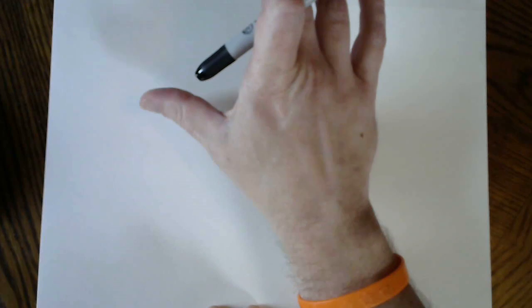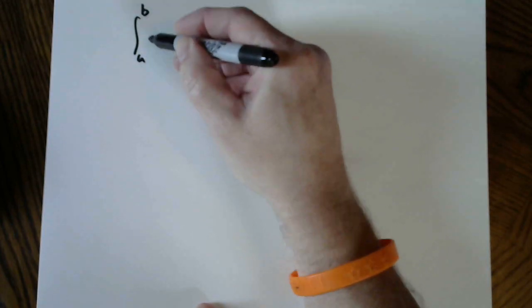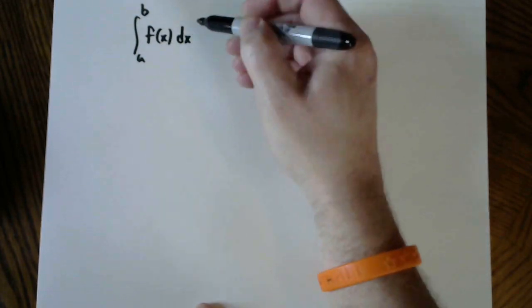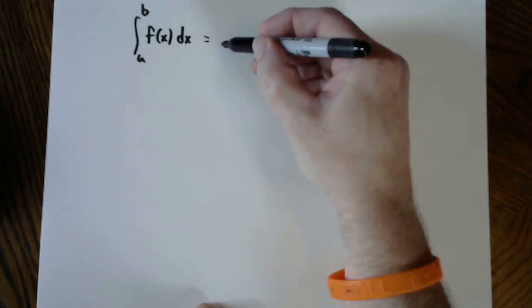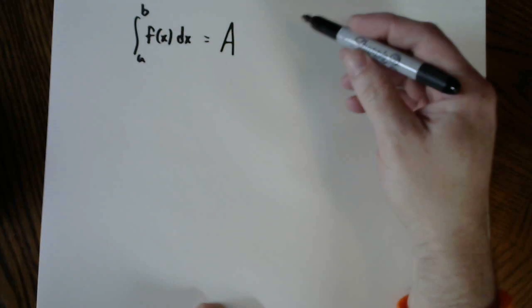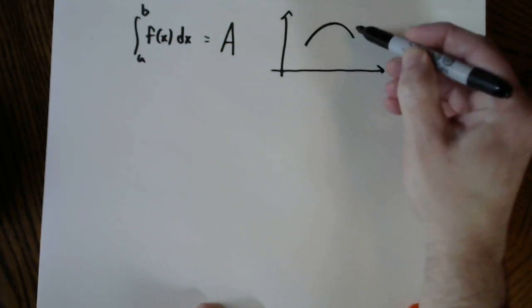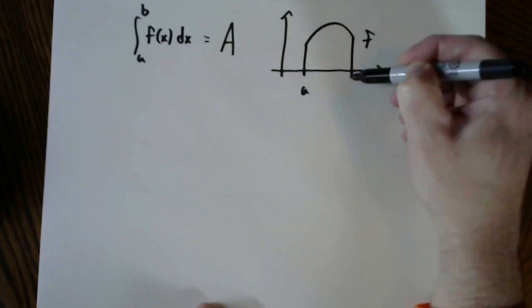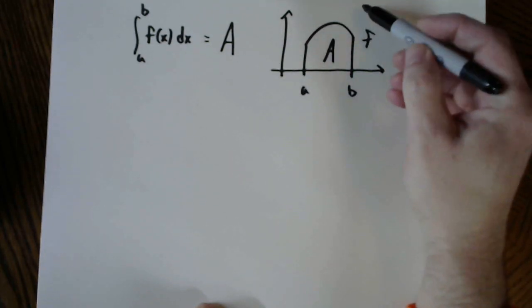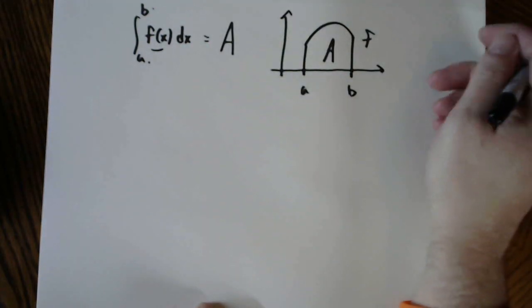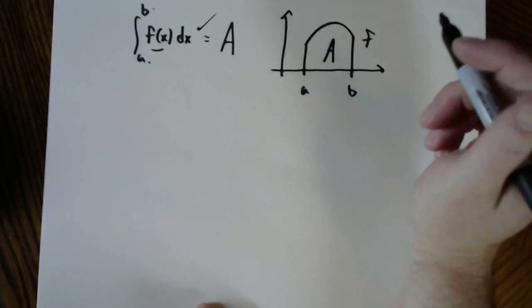This section is Section 5.1 — it involves area. The basis is a fundamental principle in calculus, very important to take away from integration in Calc 1: a definite integral is evaluated numerically, and that number can be interpreted as the area under a function between two values. That's our physical interpretation of the definite integral.